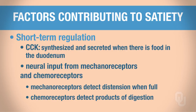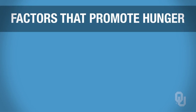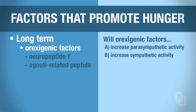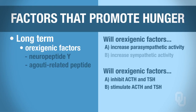What promotes eating? The long-term orexogenic factors include neuropeptide Y and agouti-related peptide. These factors promote eating by increasing parasympathetic activity. They also inhibit the production of ACTH and TSH, meaning cortisol and thyroid hormone are not produced, so metabolism is not increased.